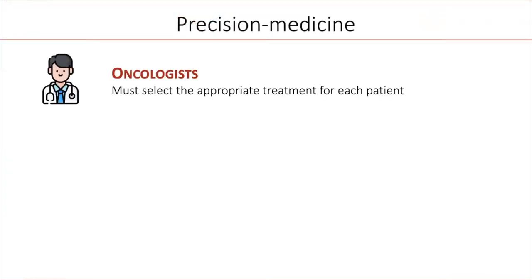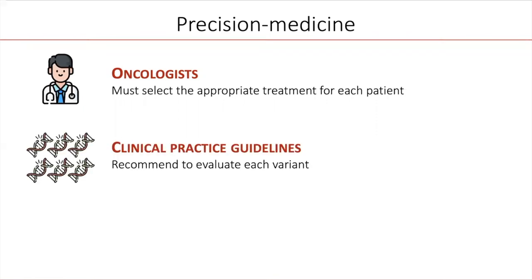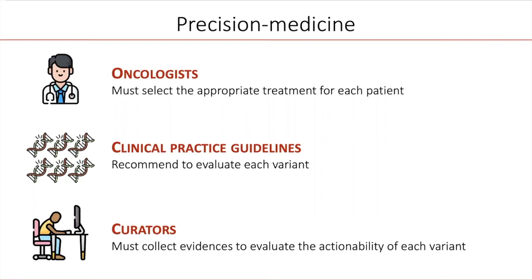In precision medicine, oncologists must identify the genetic variants of a patient that are clinically actionable in order to select the appropriate treatment. Clinical practice guidelines recommend to evaluate each variant, but for each patient there are thousands of variants to evaluate. Therefore, the work is usually performed by curators who will search in genetic variant databases as well as in the literature to collect evidences.